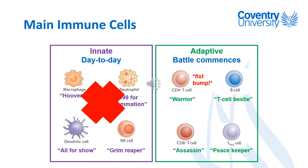There's another type of T cell which is CD8 positive. These cells also mature in the thymus after being produced in the bone marrow, but rather than having CD4 on their surface, they have CD8. Their role is very similar to that of natural killer cells — they can bind to infected cells and tumour cells and, through almost the exact same mechanism as natural killer cells, cause that cell to die. That's why I think of them as the assassins.